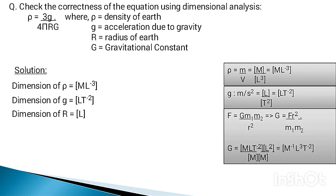To find the dimension of G, we use the formula F = Gm₁m₂/r². From that we get G = Fr²/(m₁m₂), where F is force, r is radius, and m₁ and m₂ are masses of two bodies. The dimension of F is MLT⁻², since force is the product of mass and acceleration. The dimension of r² is L², and m₁ and m₂ both have dimension M. So the dimension of G equals M⁻¹L³T⁻².